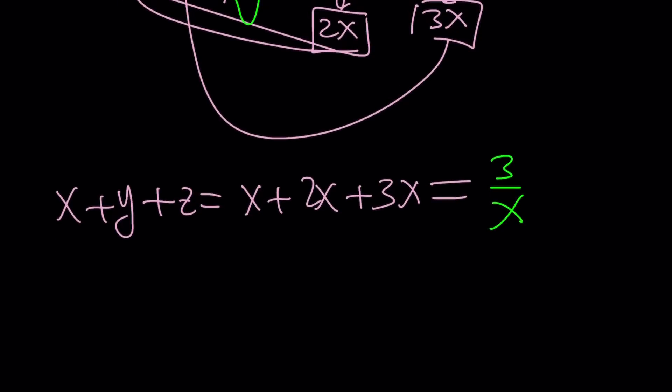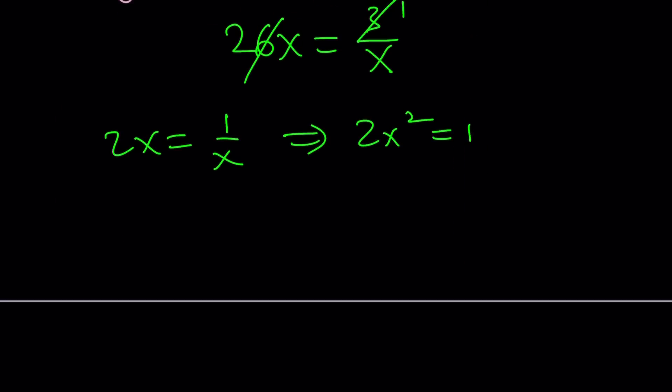x plus 2x plus 3x is 6x equals 3 over x. Cross multiply. First cross cancel, maybe. 2x equals 1 over x. And then cross multiplication gives you 2x squared equals 1. And x squared equals 1 half. I told you x, y, z are not integers.